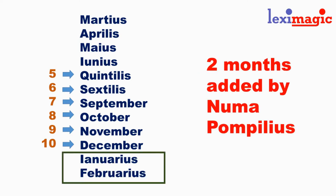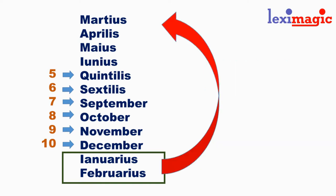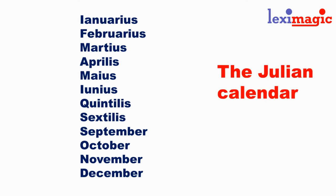A later Roman emperor, Numa Pompeius, added two months at the end of these ten months — Januarius and Februarius. And somewhere in the evolution of the calendar, these two months were shifted from the end of the list to the beginning, which is why we get the anomaly in the numbering of these months.